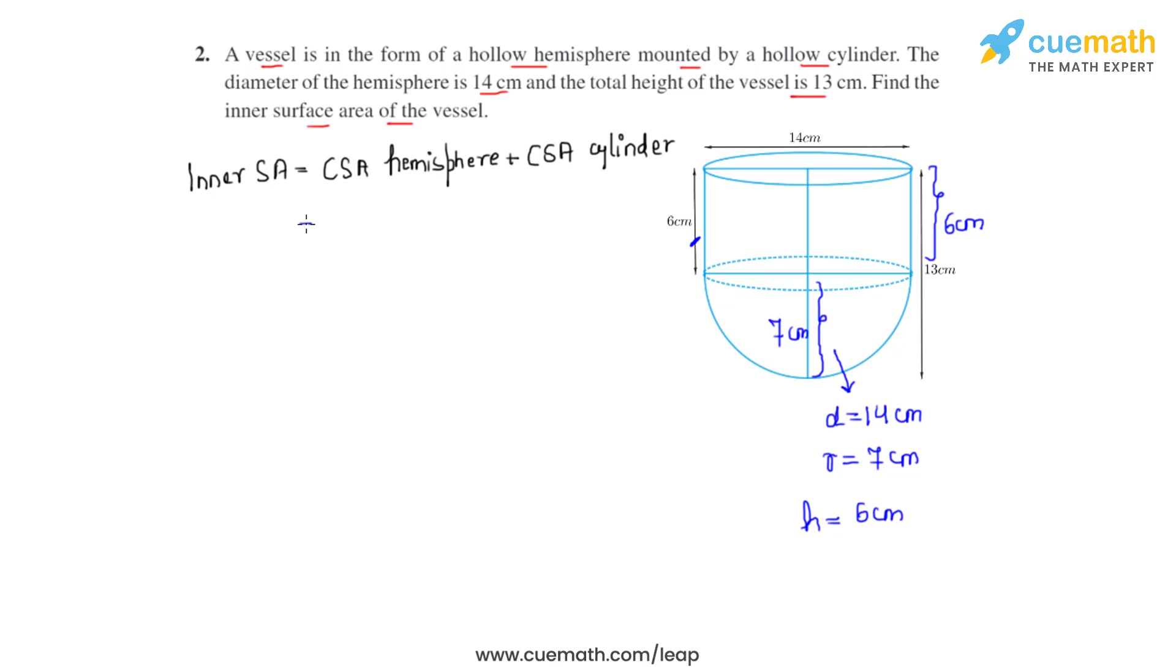And the curved surface area of a cylinder can be found by making use of the formula 2πrh. We can take 2πr common, so we'll be left with r plus h.